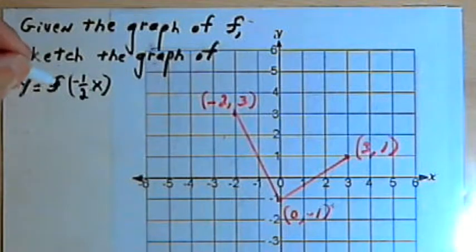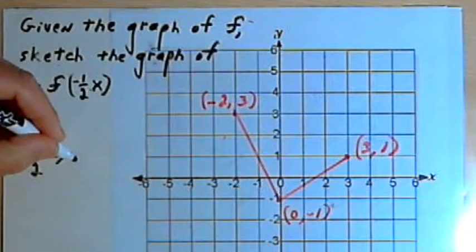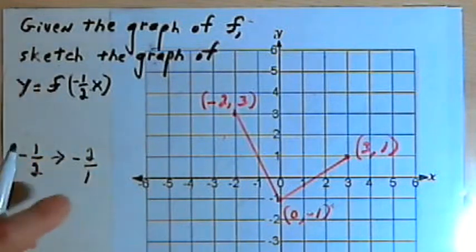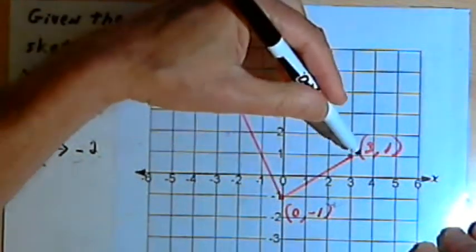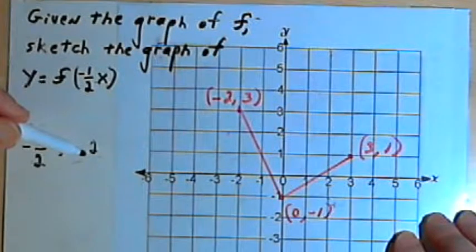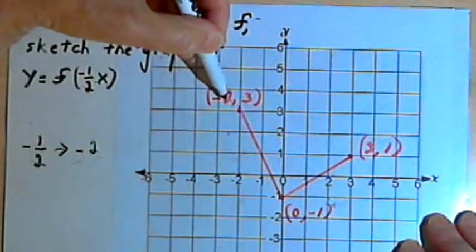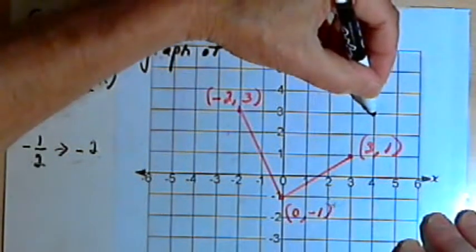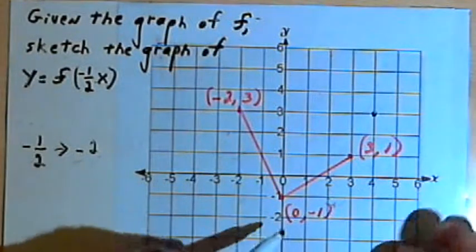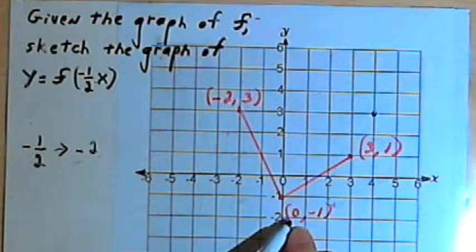So let's try a graph of y equals f of negative 1 half x. So I want to take the reciprocal of that negative 1 half. The reciprocal of that is going to be negative 2 over 1, which is negative 2. This means I want to take each of those x-coordinates and multiply them by negative 2. So this point here, (-2,3), is going to turn into (4,3), because I'll take the negative 2 and multiply it by my negative 2. That will put a point here at (4,3). (0,-1) is going to stay the same, because when I multiply zero by negative 2, it's still a zero.